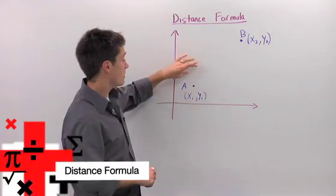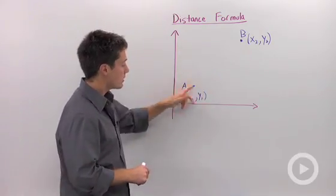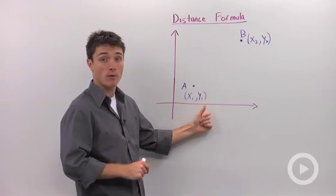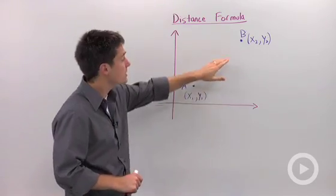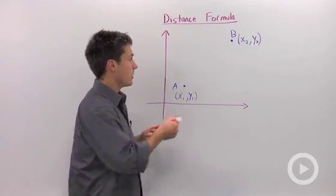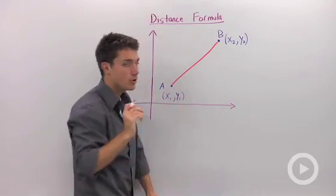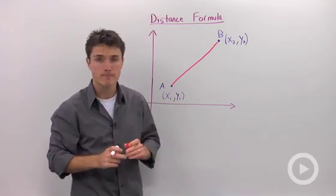If you have two points, let's call them A and B, somewhere in a coordinate plane, and we call A (X1, Y1), so that's the ordered pair at A, and we say B has the ordered pair (X2, Y2), we can calculate the direct straight line distance between them using what we know about the Pythagorean Theorem.